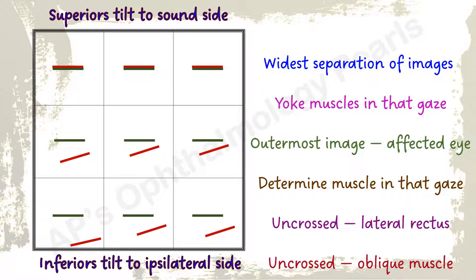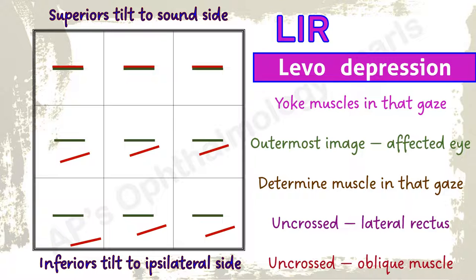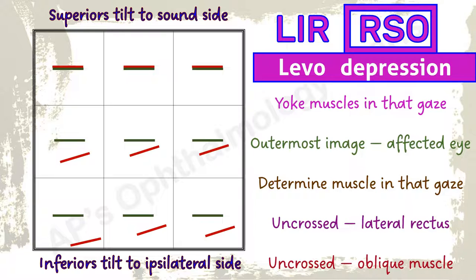Maximum separation of images is in levo depression. The yoke muscles acting in levo depression are the left inferior rectus and the right superior oblique. Red is the outermost image, so the right eye is affected — this is a right superior oblique palsy. Uncrossed diplopia, so the oblique checks out. Tilt is towards the left or sound side, so superior checks out.